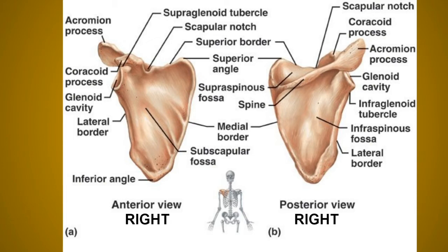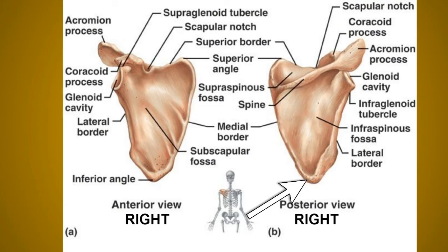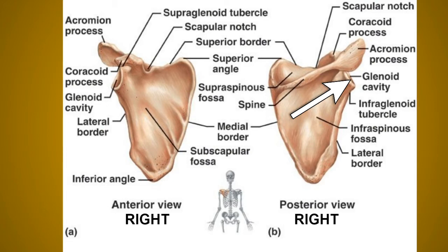The scapula has three angles: the superior angle, the inferior angle, and the lateral or glenoid angle. The superior angle is present towards the medial side and is covered by the trapezius muscle. The inferior angle is covered by the latissimus dorsi and moves forwards round the chest when the arms are abducted, assisted by the serratus anterior and trapezius muscles. The lateral or glenoid angle is broad, bears the glenoid cavity forming the shoulder joint with the humerus, and is directed forwards, laterally, and slightly upwards.